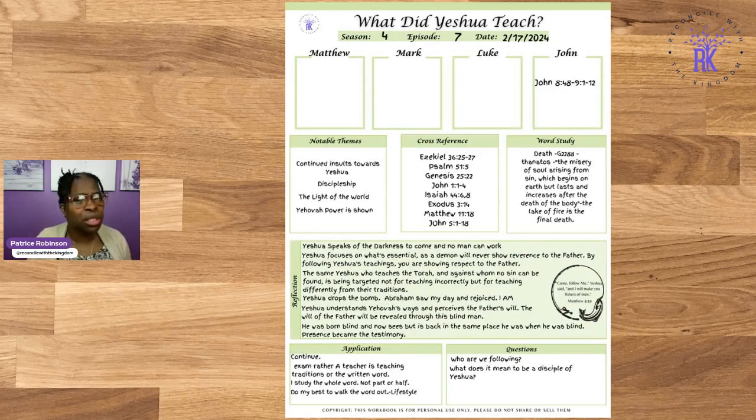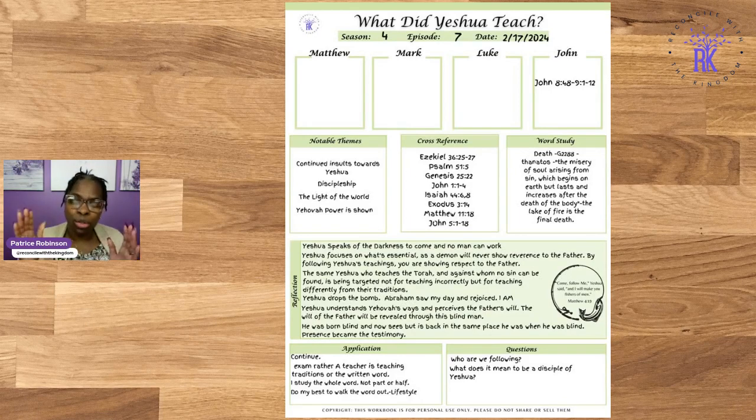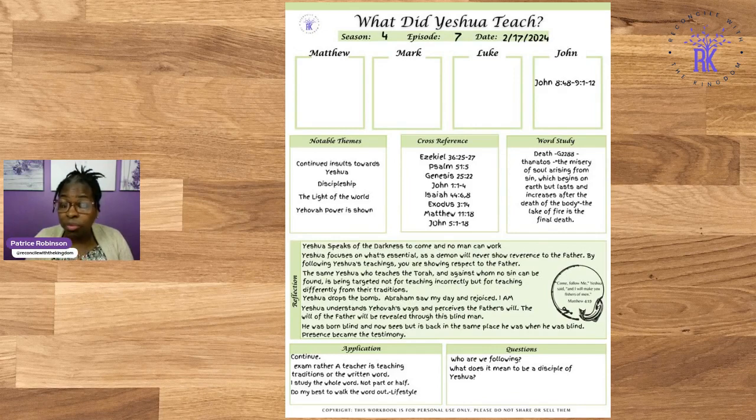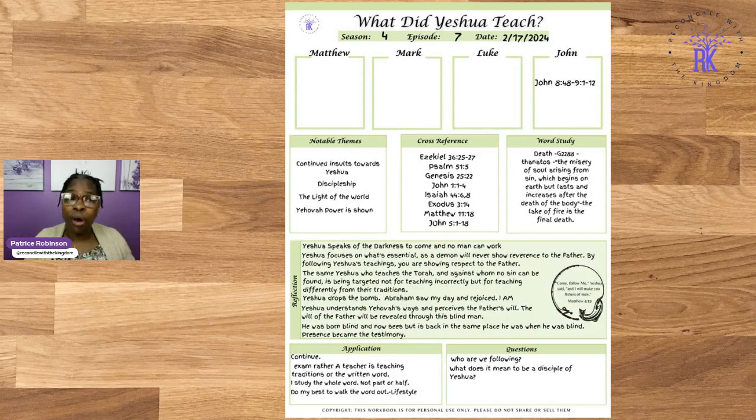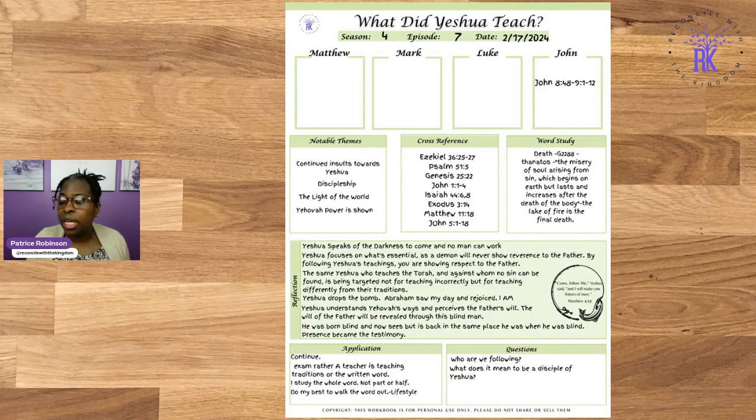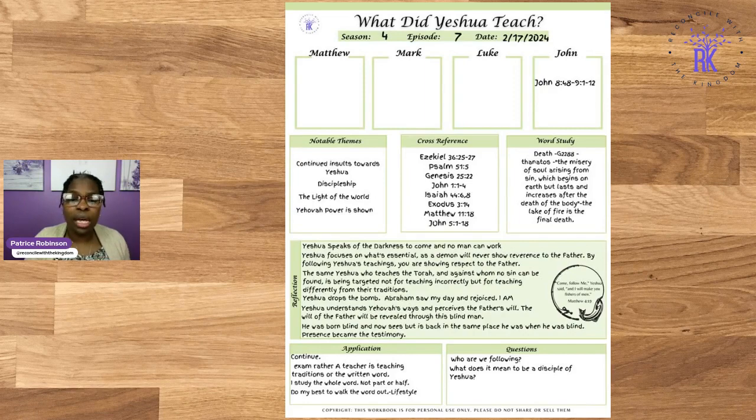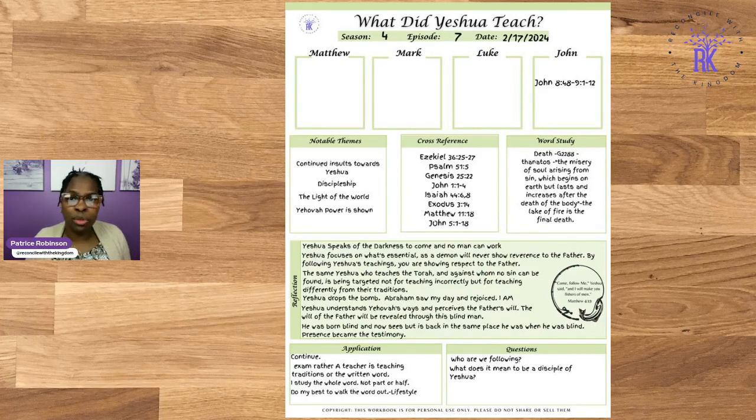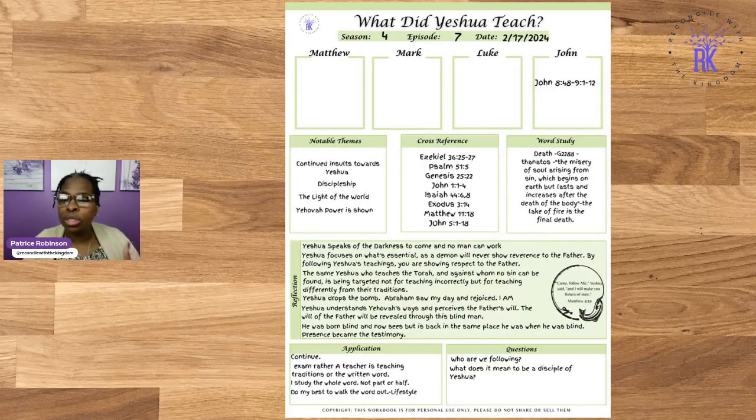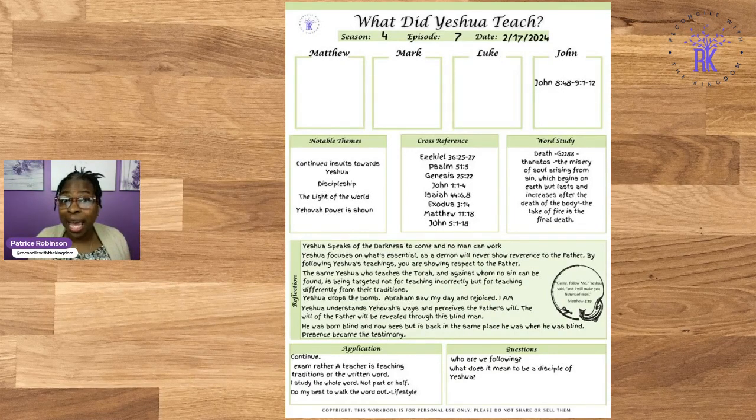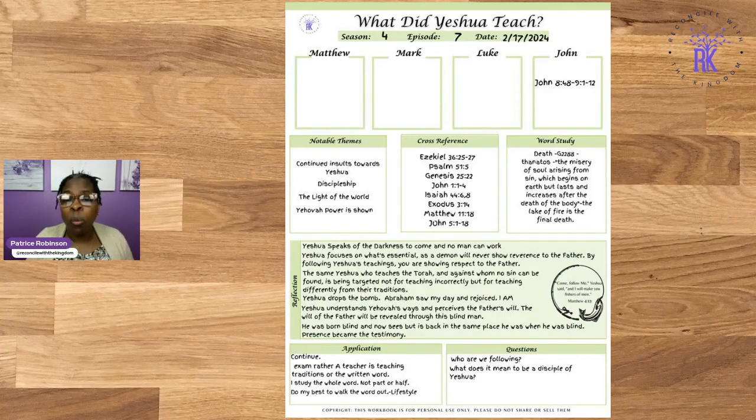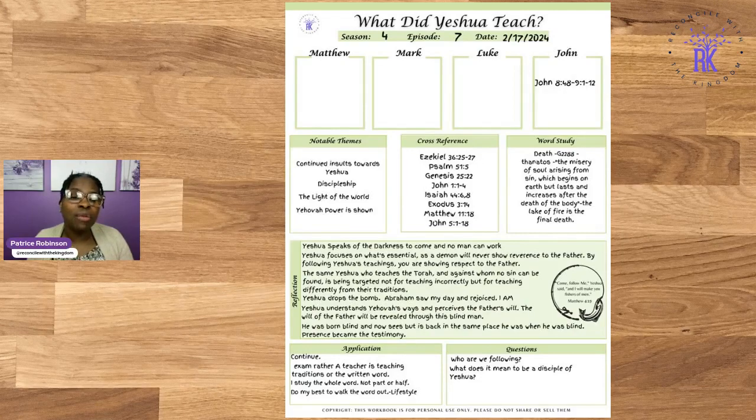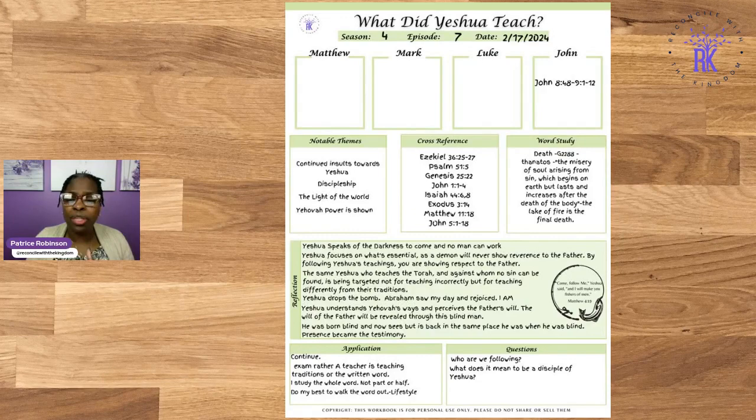Now I have my word study. My word study is death. This is the final death that they will see when he said you will not taste death. This is the death that you will not taste when you're following the Messiah. Now the Messiah in John chapter 8 had a discussion about he had to get things done before the darkness come. I'm going to read that to you. John chapter 9 verses 4 through 5: We must carry out the works of him who sent me as long as it is day. Night is coming when no one can work. While I'm in the world, I am the light of the world. So Yeshua is speaking about this darkness.